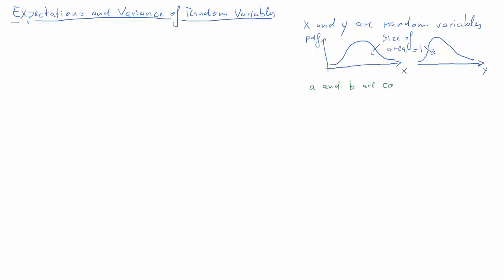We also need two more constants, a and b. They are constants — values which will never change; you could substitute these with numbers which never change, but we call them a and b. Firstly, expected values of random variables are sometimes called measures of central tendency — that is the average value we would expect if we were to repeatedly draw from that random variable. For example, if you were to repeatedly roll a dice, on average you would expect a value of 3.5. That is the expected value of a dice roll.